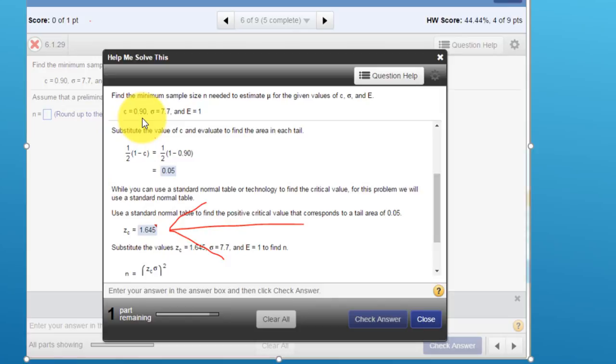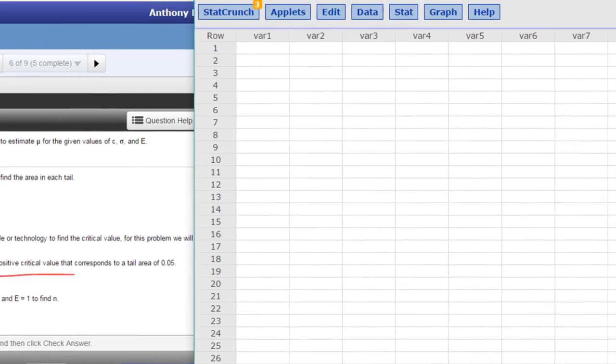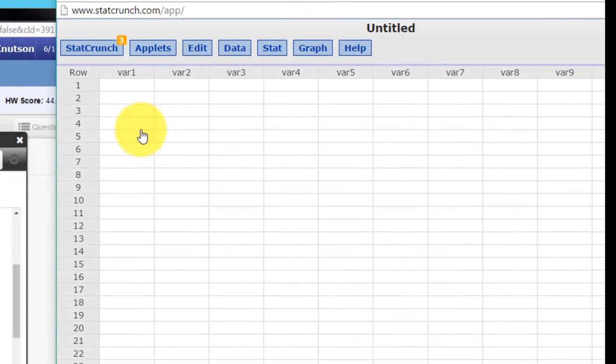But for a confidence interval we're looking at the critical areas on either end of the normal distribution curve, and so we enter it with the tail area 0.05. Let's solve this using StatCrunch. You can either call up StatCrunch from your question help tab there or go to StatCrunch.com.